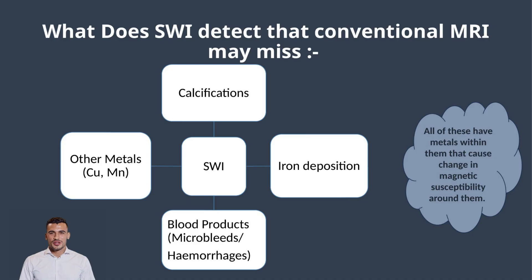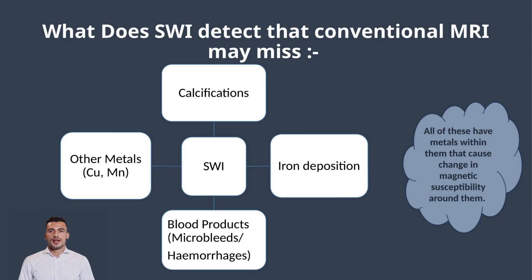So let's come to the importance of susceptibility weighted imaging. What does it detect that conventional MRI may miss? It basically detects substances that alter the local magnetic field around them — they are all basically metals or their products. For example, calcium, iron, copper, zinc, blood and blood products, which again contain iron in its different forms.